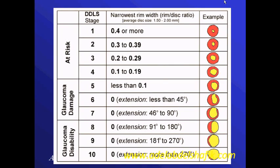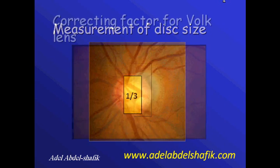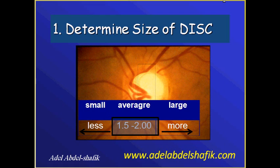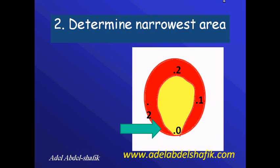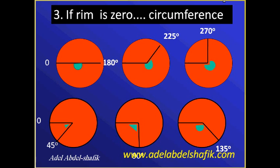To follow this system of classification, you start by measuring the disk size using the slit lamp, then apply the correcting factor, and record the size as an average — between 1 and 1.5 to 2 millimeters, or less or more depending. Then you draw the circle of neural tissue thickness all around and define the neural rim tissue.